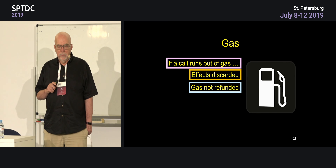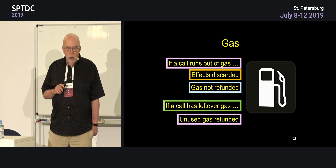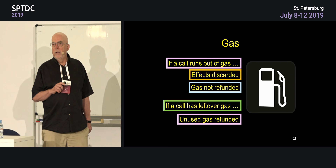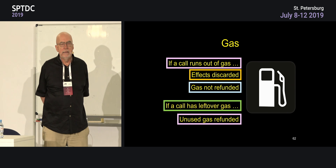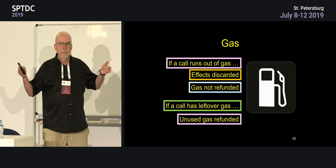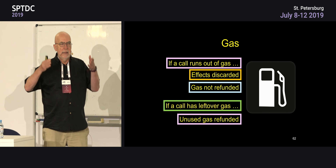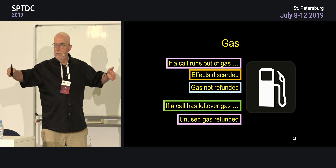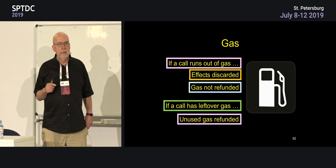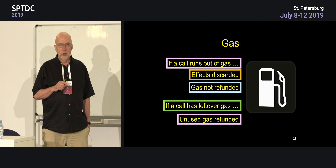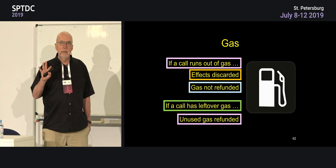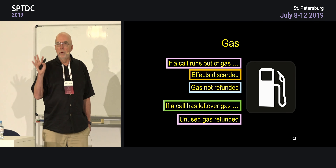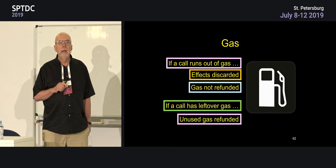If a call has leftover gas, it's refunded. When you make a call, you say what's the maximum amount of gas I'm willing to spend and what's the price I'm willing to pay per gas. If you exceed the limit, your call aborts — this protects against denial-of-service attacks. There are all kinds of attacks where you can trick someone into making a call that burns up their gas without realizing it. This is something with no analogy in regular programming languages — normally, when you make a call, you don't worry about how much money is going to come out of your pocket.